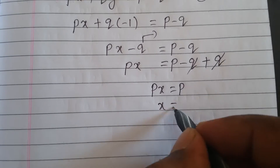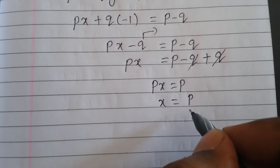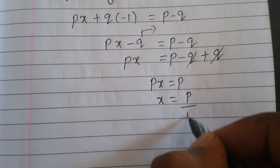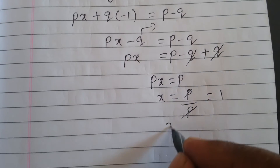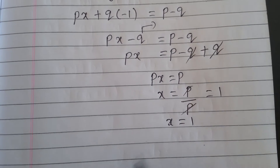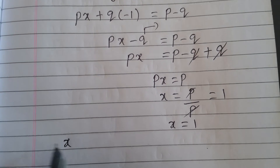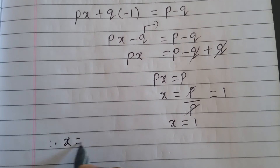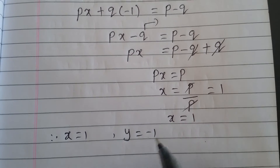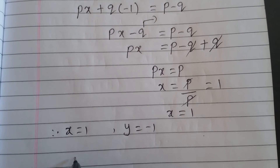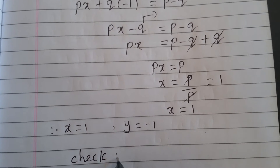So px equals p minus q plus q. The minus q and plus q cancel, giving px equals p. Dividing both sides by p, the p cancels and x equals 1. Therefore, x equals 1 and y equals minus 1.